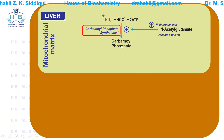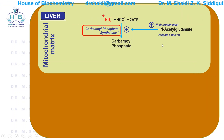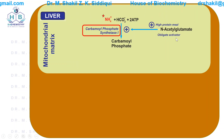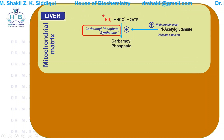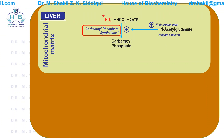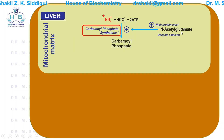Allosteric enzymes can function on their own but work better when an activator is present. However, an obligate activator means the enzyme cannot work without it — its presence is a must. If N-acetyl glutamate is absent, CPS1 will not work. It is like a car key: if you have the key you can start the car; if you don't have the key, the car won't start.